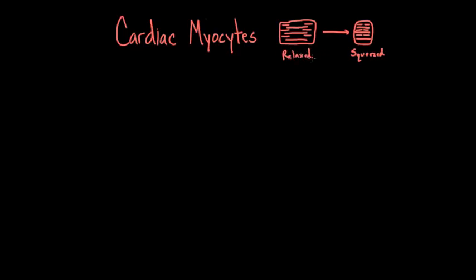The trigger that gets it from squeezing — and at some point it has to go back to relax to beat again — that trigger for squeezing is calcium. It's easy to get confused when thinking about all this squeezing and relaxing. But if you just keep your eye on calcium and think about the fact that calcium is the trigger, then you'll never get confused. You'll always be able to find your way in terms of where the heart is in its cycle.